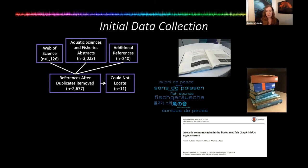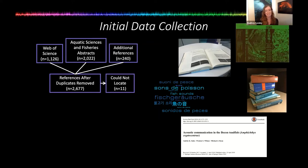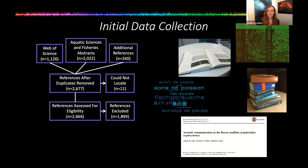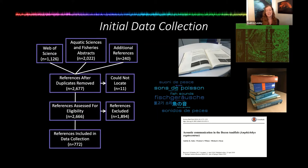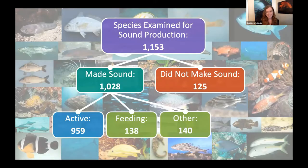I assessed these references for relevance — that they had an independent reporting of fish sound production examination of a species identified to the species level. I excluded about 1,900 references, leaving 772 relevant references that qualified for data collection. In reading all of these references, I found 1,153 unique fish species that have been examined for sound production. Of those, only 125 were not shown to make sound when studied, though they may still produce sounds upon further examination. That still means there are records of 1,028 species that were shown to make some type of detectable sound.